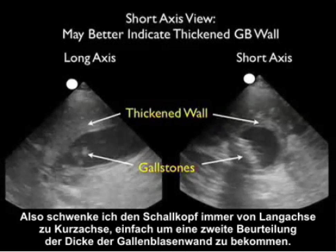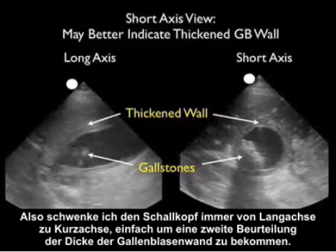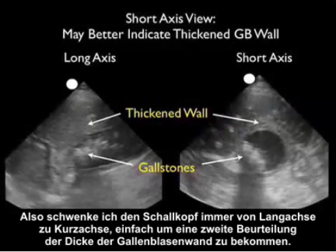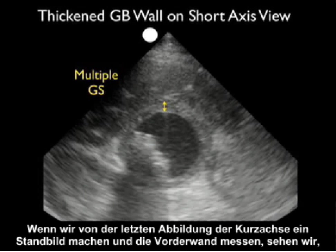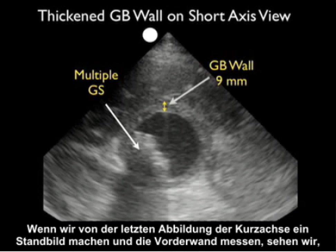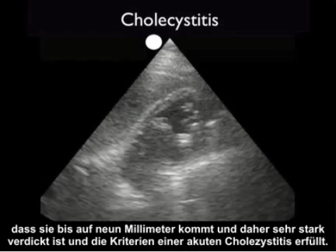I always swivel the probe from long to short just to get a secondary assessment of how thick that gallbladder wall is. And if we still that last image down, looking in short axis and measure that anterior wall, we can see that it comes in at nine millimeters — very thickened, fulfilling the criteria of acute cholecystitis.